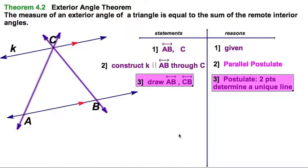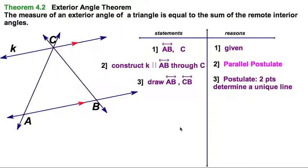Then, just like we did before, I'm going to draw in the lines AC and CB, because two points determine a unique line, ray, or segment.